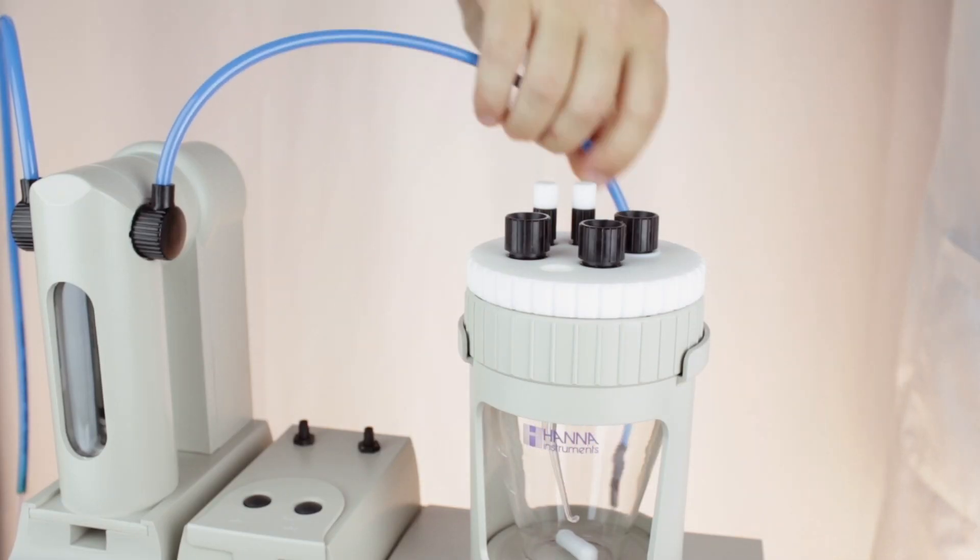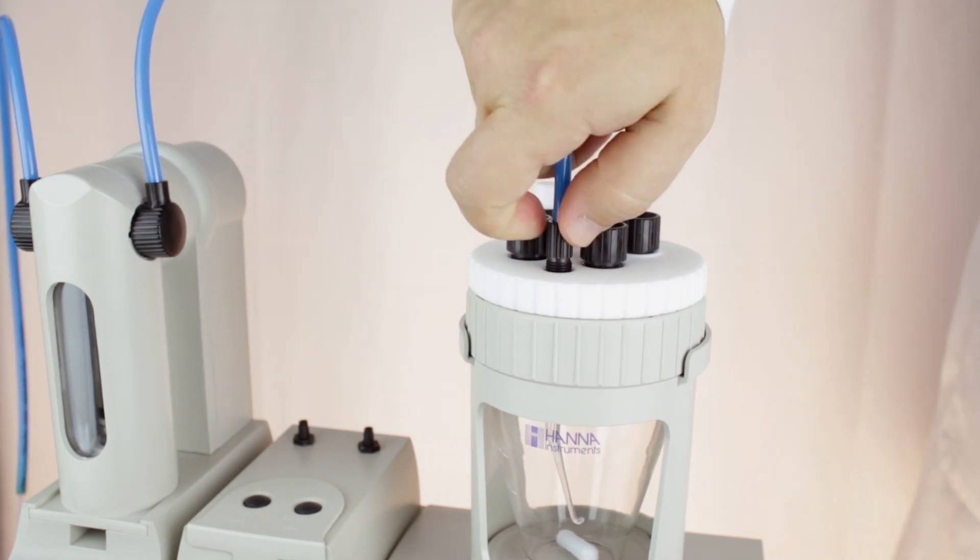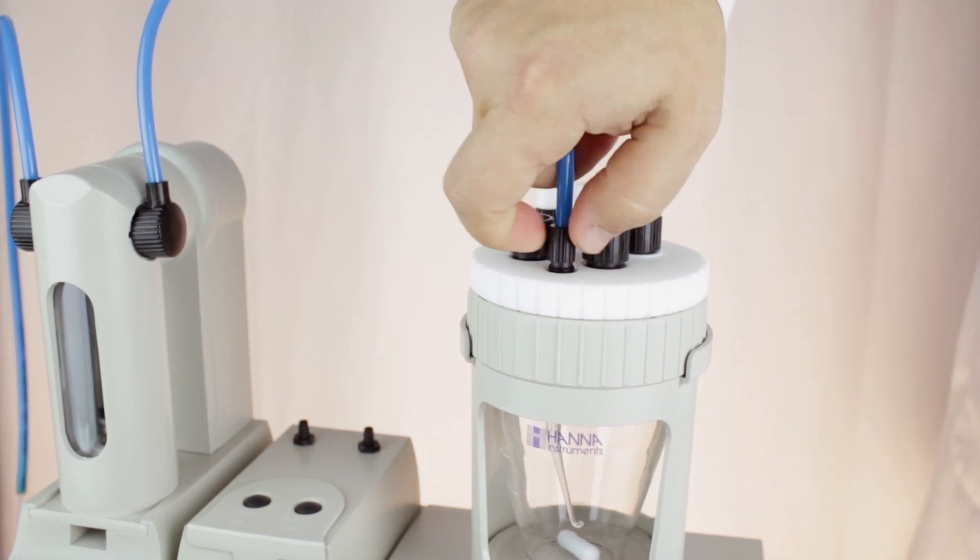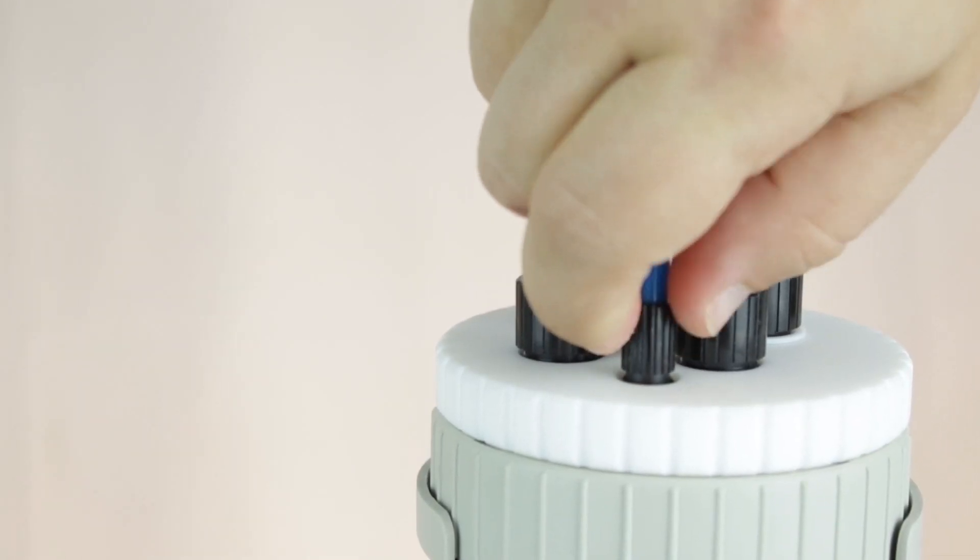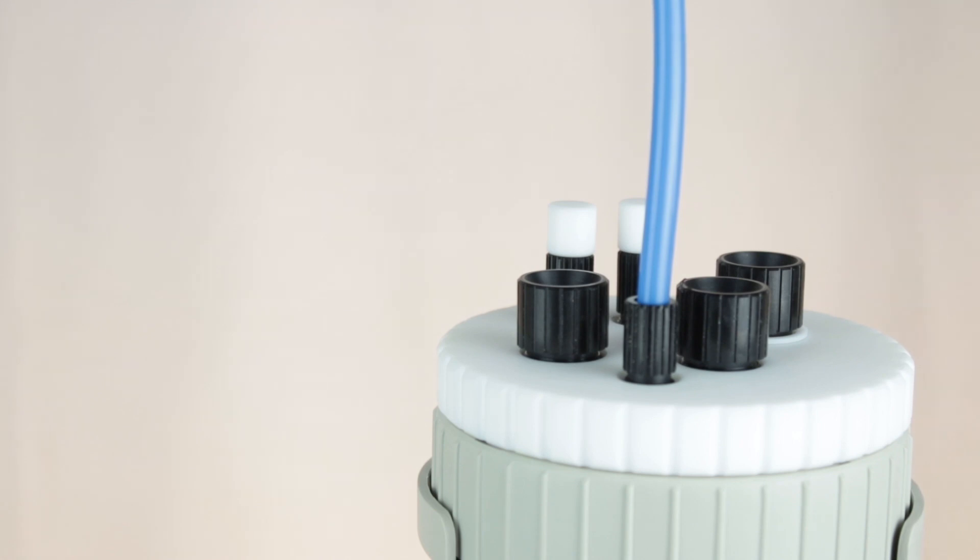Start with the dispensing tip. The HI-903 comes with a tip and O-ring already installed, so all we'll need to do is fasten the dispensing tube from the burette to the tip port. Be sure that the fitting is finger tight, but do not over-tighten.